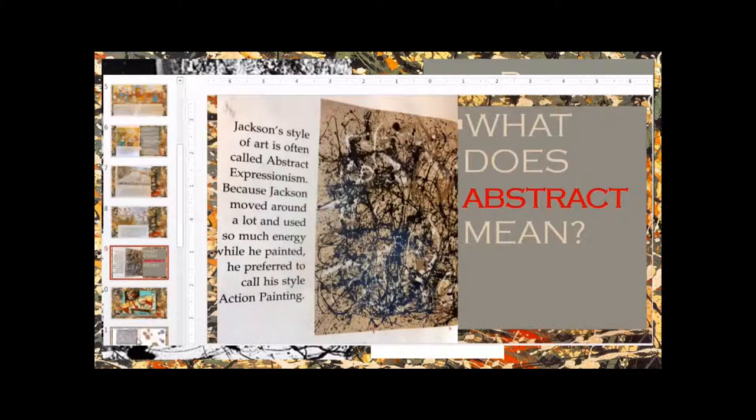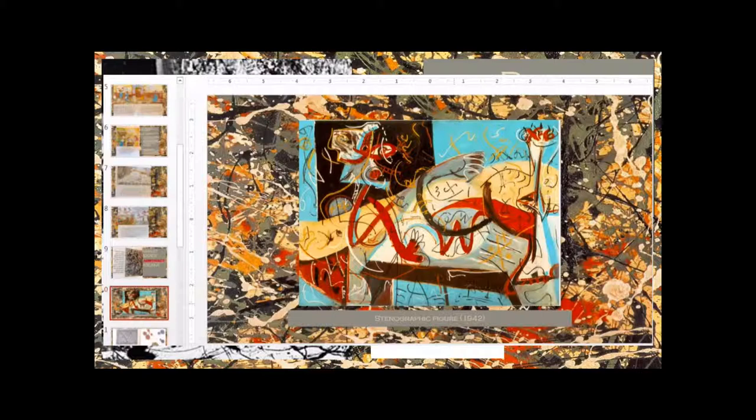Which brings us to the next question. What does abstract mean? Jackson's style of art is often called abstract expressionism. Because Jackson moved around a lot and used so much energy when he painted, he preferred to call his style of painting action painting. Here's one of his paintings called Stenographic Figure, where you can kind of see some shapes and lines and different designs.